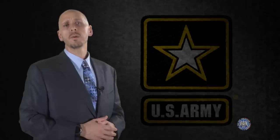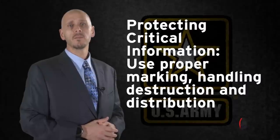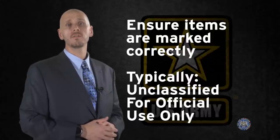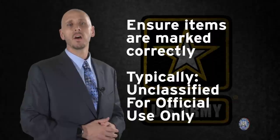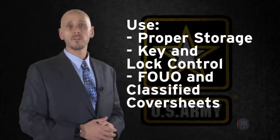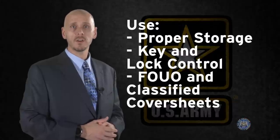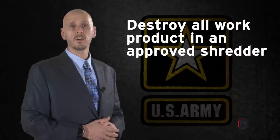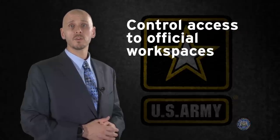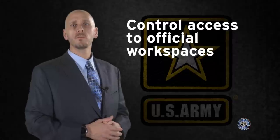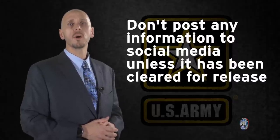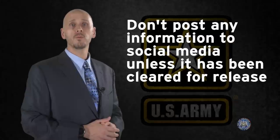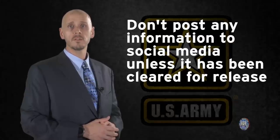So how do we protect critical information? Through proper marking, handling, destruction, and distribution. Ensure your items that contain information identified on the SIL are marked correctly — primarily unclassified for official use only. Physically protect our critical information through proper storage, key and lock control, and the use of FOUO or classified cover sheets. Destroy all of our work product in an approved shredder. Control physical access to official workspaces. And probably the most important and most frequently disregarded protection: avoid posting anything associated with test and evaluation or official events or locations on social media without prior approval from your supervisor, the public affairs office, and the OPSEC officer.